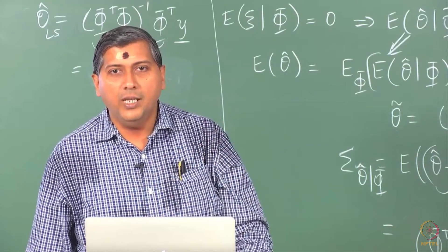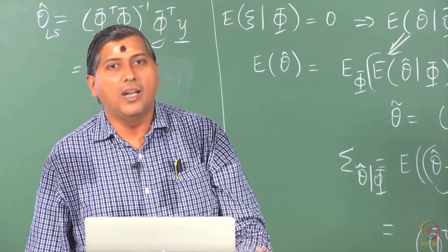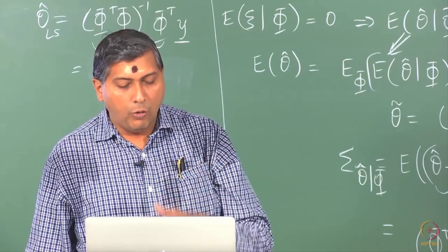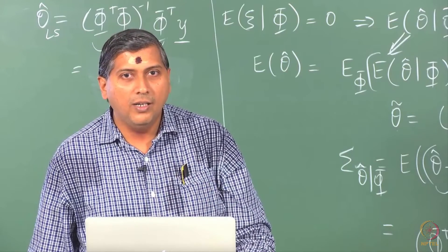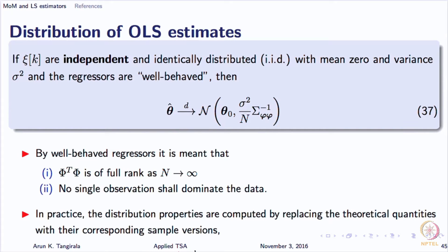So in general, we assume now theta hat to be following a Gaussian distribution. But keeping in mind that it is a result that holds in general for large n for non-Gaussian errors. So that is the statement here. Remember we do not write the statement exactly this way. We say rather root n times theta hat minus theta naught follows asymptotically a Gaussian distribution. Again you do assume that phi transpose phi is of full rank and there are no outliers in the data or no observations in the data that will hijack the analysis.